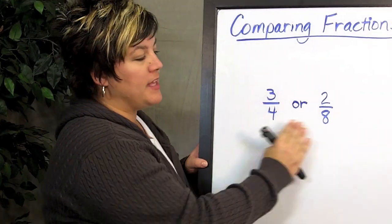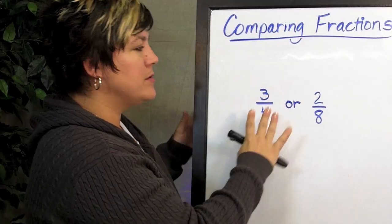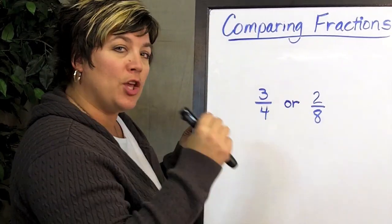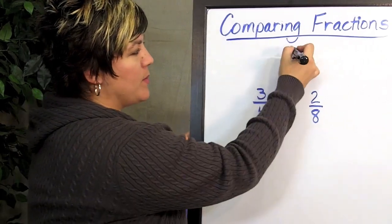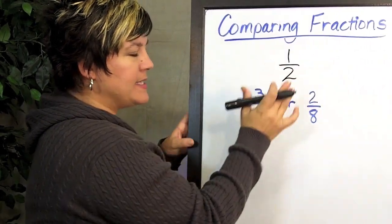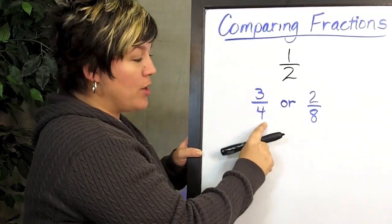So let's take a look at these two fractions. Let's say we wanted to know which is greater, 3 fourths or 2 eighths. A really quick way to do this is by thinking about half. So we'll look at this one and we have to try to keep in mind, is it greater than half or less than half? So we'll take a look at our denominator, which is 4.